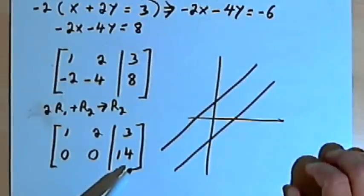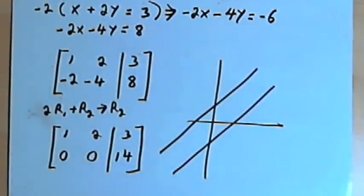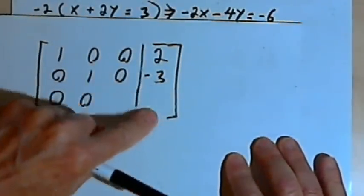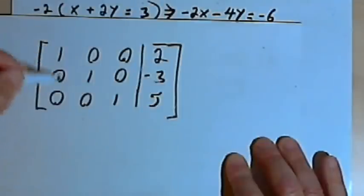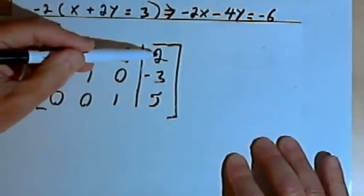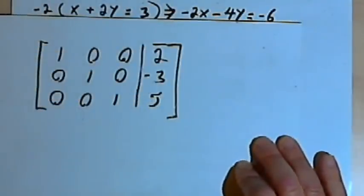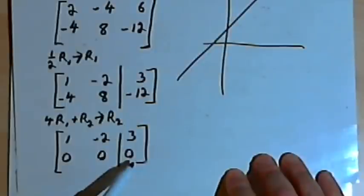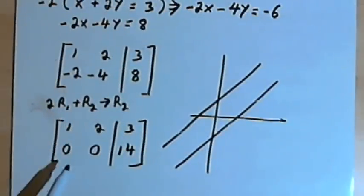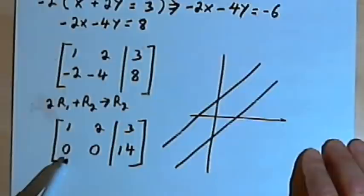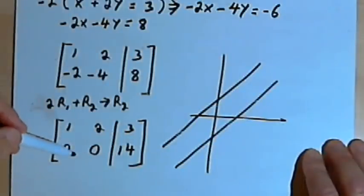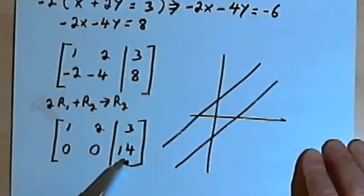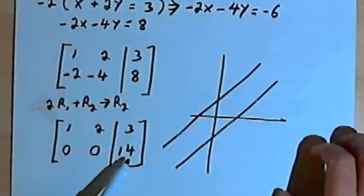Just to review your options: if you end up with the identity matrix on the left side and numbers on the right, you've got one solution. If you end up with a matrix that has all zeros on the bottom row, you've got a dependent system and an infinite number of solutions. If you end up with zeros in the bottom row on the left side but a number on the right side in that row, you've got an inconsistent system and no solutions.